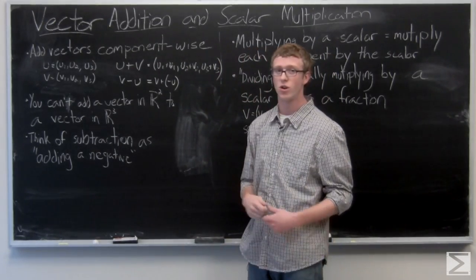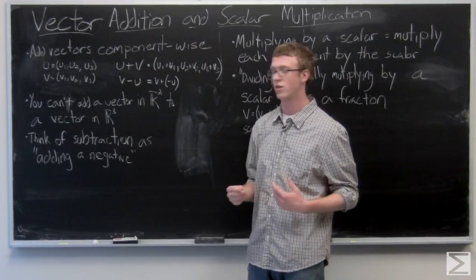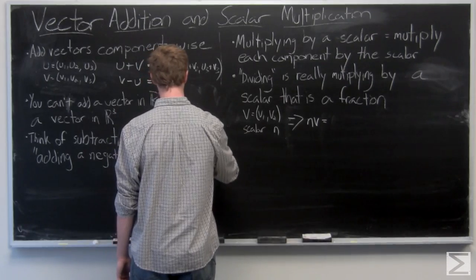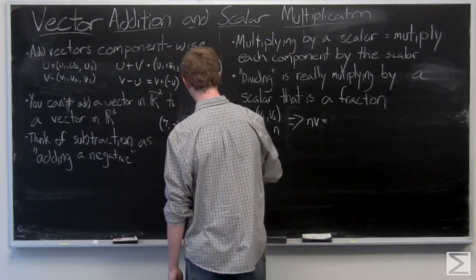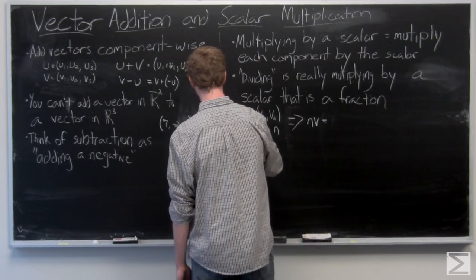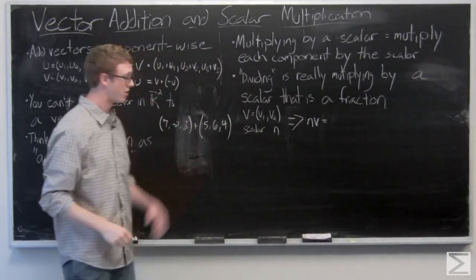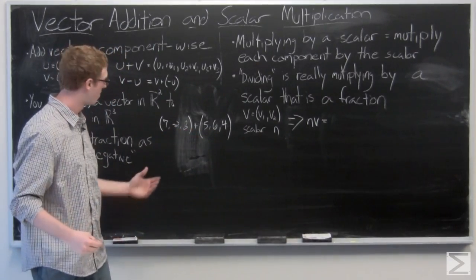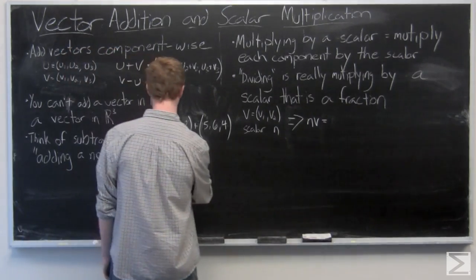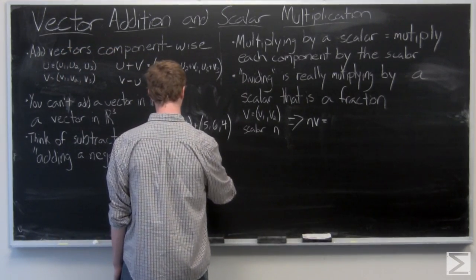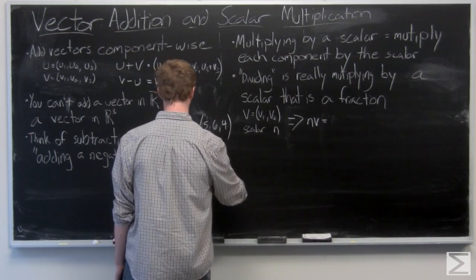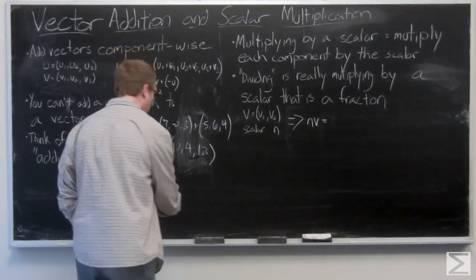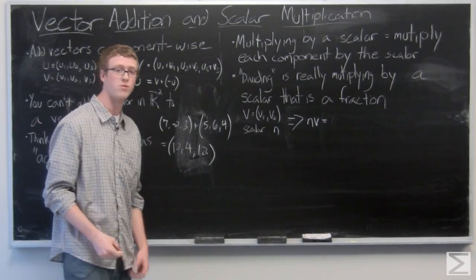We can take a quick look at some examples here just to show you guys what it's going to look like when you're actually using numbers. So we have two vectors in three space: (7, -2, 8) and (5, 6, 4). The result in vector, make sure you're adding component-wise, and your result in vector is going to be (12, 4, 12). Let's take a look at an example of subtraction.